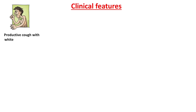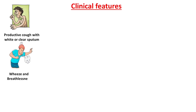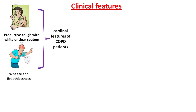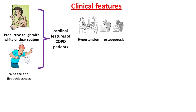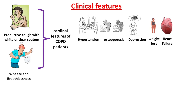Productive cough with white or clear sputum, wheeze and breathlessness are the cardinal features of COPD patients. Hypertension, osteoporosis, depression, weight loss and reduced muscle mass with general weakness and right heart failure can be seen as systemic effects of COPD.